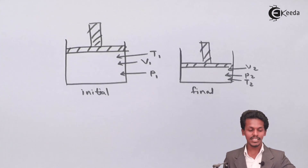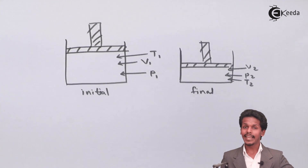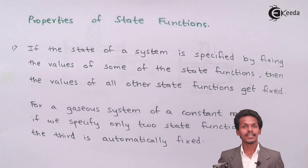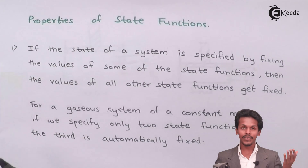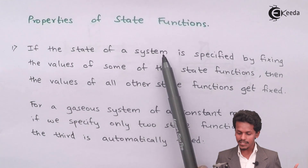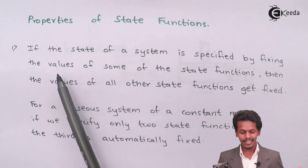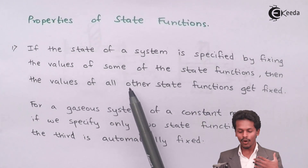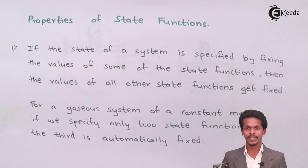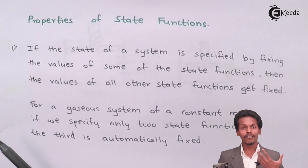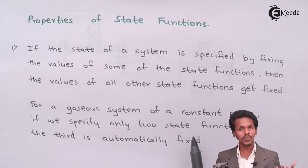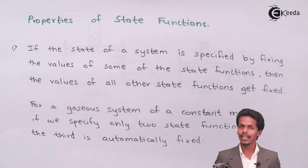Now let us talk about the properties of state functions. The first property is: if the state of a system is specified by fixing the values of some of the state functions, then the values of the other state functions get fixed. For a gaseous system of constant mass, if we specify only two state functions, then the third is automatically fixed.